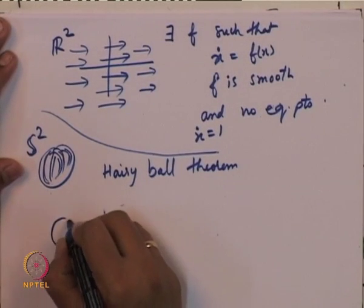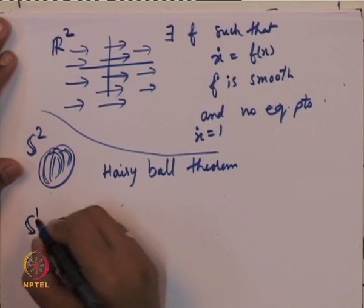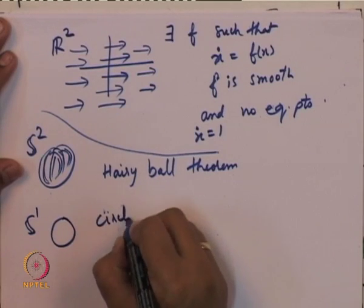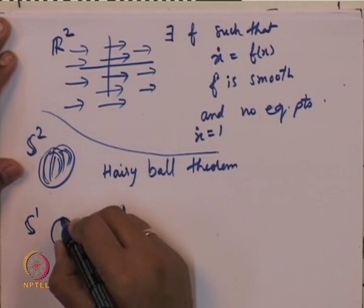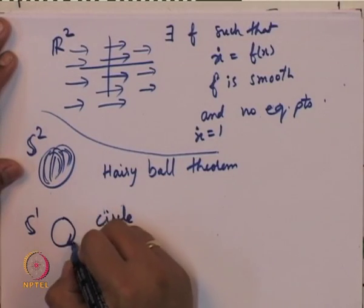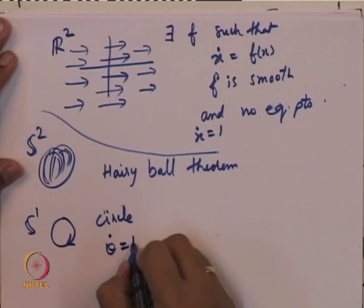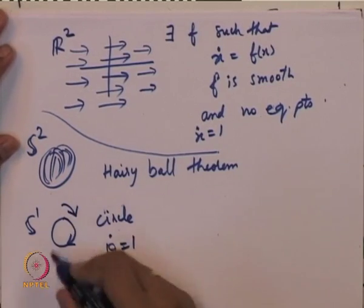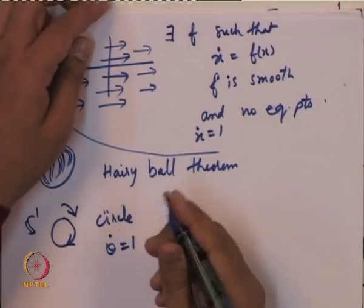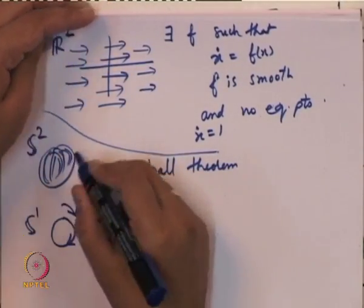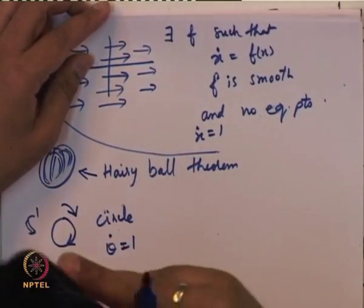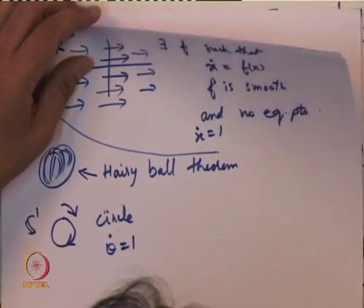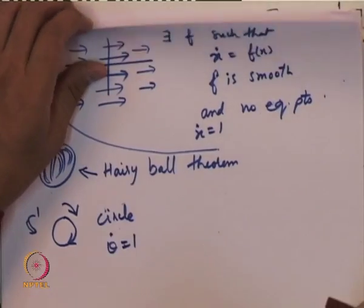Let us ask about a circle. On S1, is it possible to have a dynamical system with no equilibrium point? Yes — one can simply have θ̇ = 1, so that it continuously rotates and at no point is there an equilibrium. The Hairy Ball theorem speaks about S2 and says one is forced to have an equilibrium point. With only simple singularities, there will in fact be at least two.